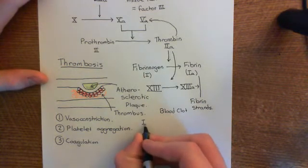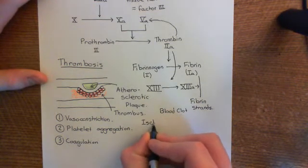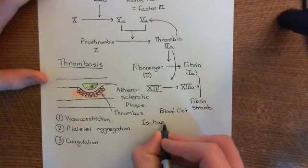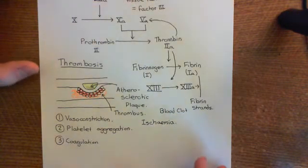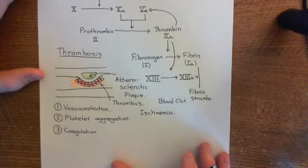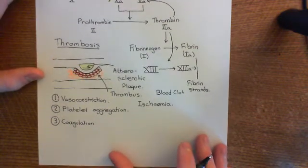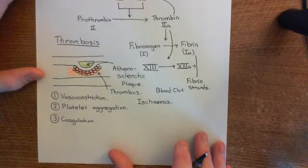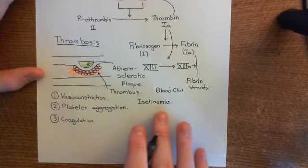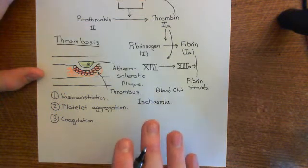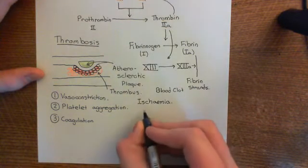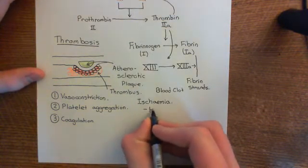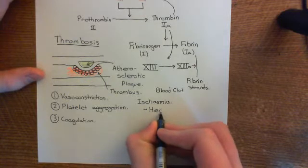Ischemia means that you've got no blood flowing to you, or at least too little blood flowing to you — it's a fancy word for lack of blood supply. If you get ischemia in two very important portions of the body, it can lead to serious repercussions. There are two places where it's really life-threatening to get ischemia: the heart and the brain, the two most important organs of the body.